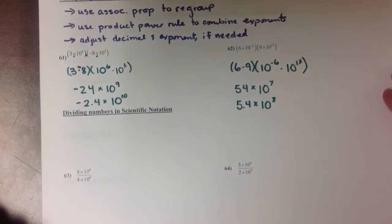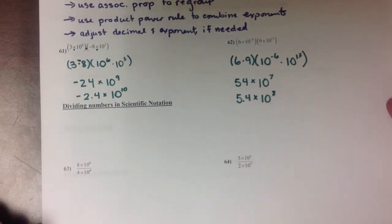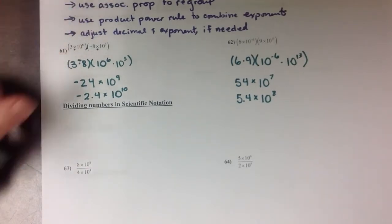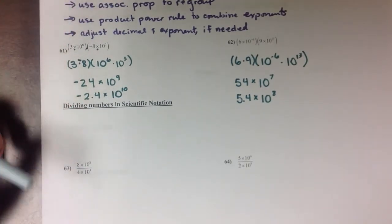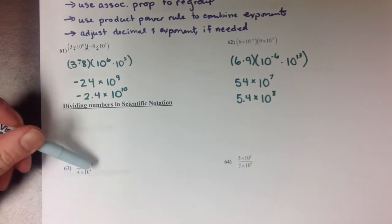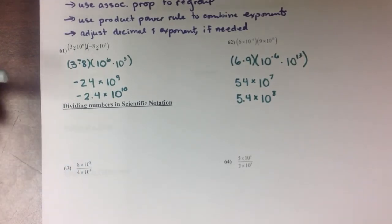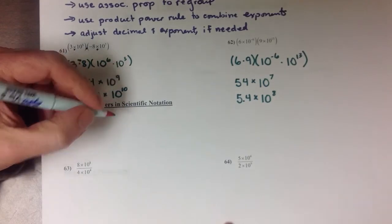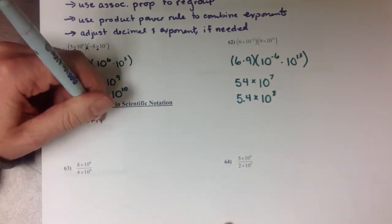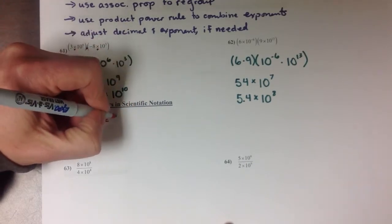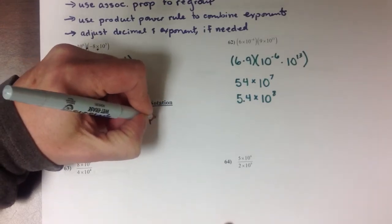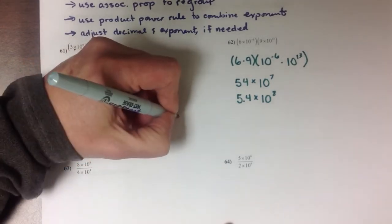The other thing we need to talk about is how you divide numbers in scientific notation. So using that same associative property, we're going to think of the number parts being separate from our power of 10s. So if we write the number and 10 power separately.